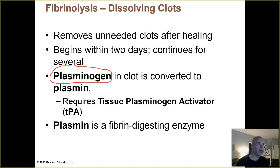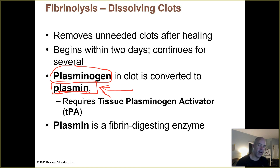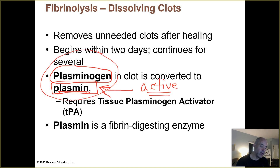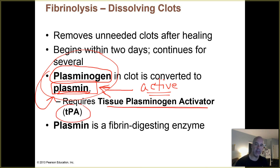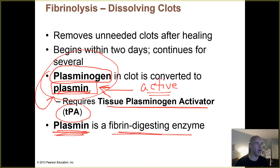After a clot has been around for a couple of days and you're ready to dissolve it, plasminogen becomes activated and gets converted into plasmin. Whenever you see the '-ogen' suffix, that's usually referring to an inactive protein in your blood that gets clipped, producing the active form — so plasmin is active. An enzyme called tissue plasminogen activator, or TPA, carries out that conversion. Once plasmin is present, it breaks apart the fibrin meshwork — it's a fibrin-digesting enzyme.